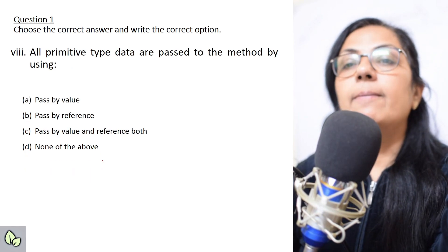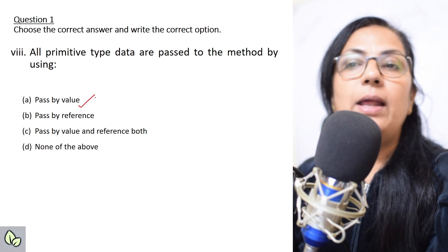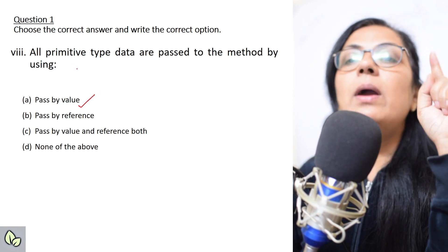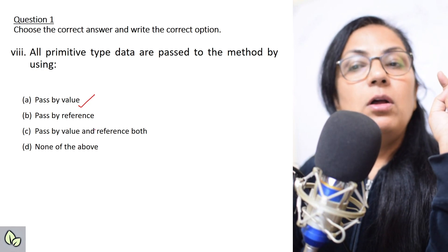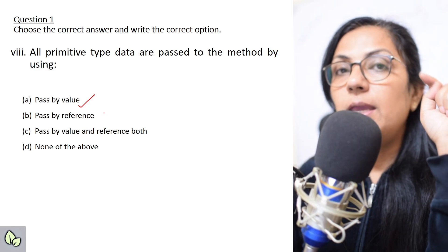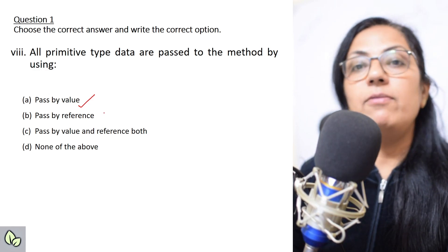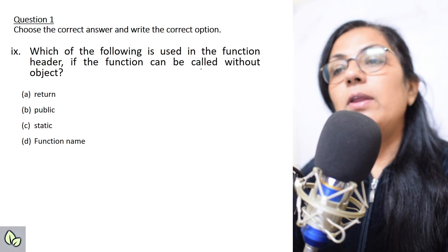All primitive data types are passed to a method using call by value. Non-primitive data types are always passed using pass by reference. In your syllabus you have pass by value methods only.